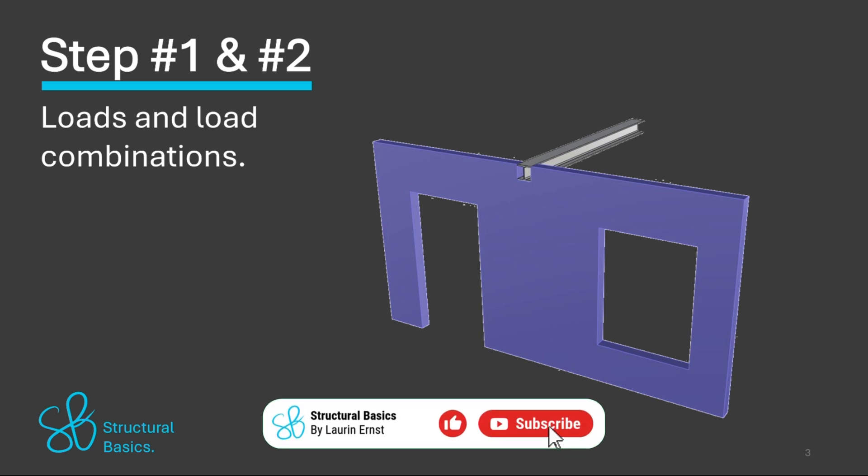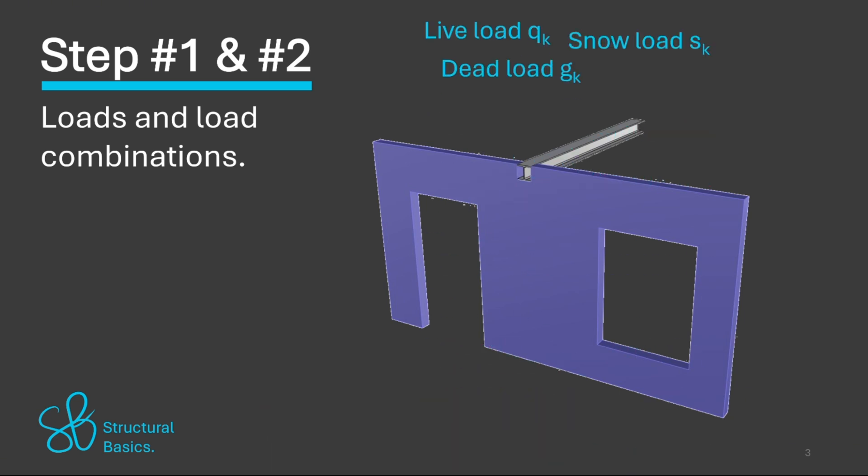First we need to figure out the characteristic area loads like dead, snow and live load that act on the beam and ultimately on the masonry wall. To get the point load we need to transfer the vertical loads through the building.